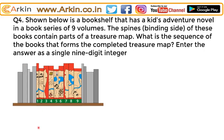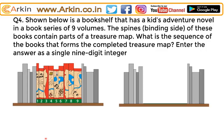In this question, there is a bookshelf on which there are nine books kept, and the spines of these books contain part of a treasure map. The question is: what is the sequence of the books that form the completed treasure map? You have to rearrange the books so that when viewed from the front, you see a complete treasure map.